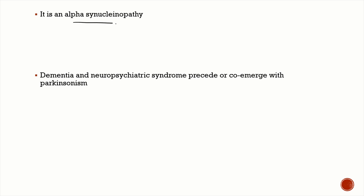Lewy body dementia comes under a group of disorders known as alpha-synucleinopathies. The other alpha-synucleinopathy you should know is multiple system atrophy.